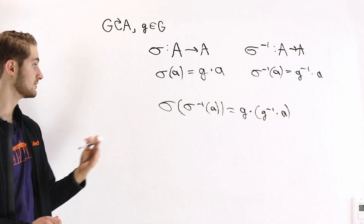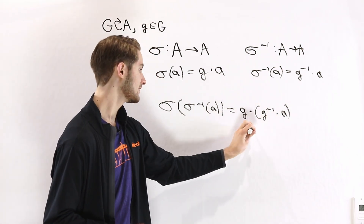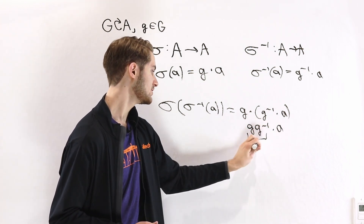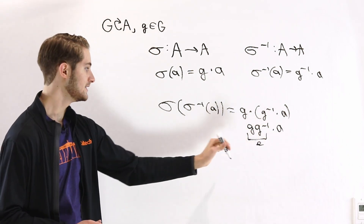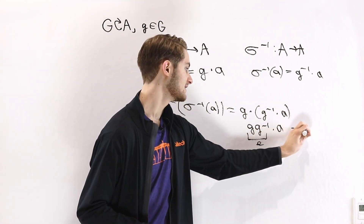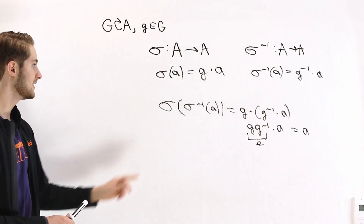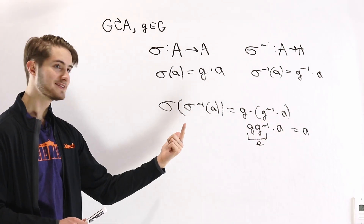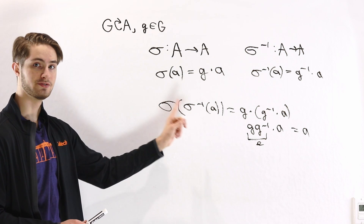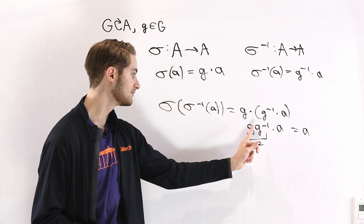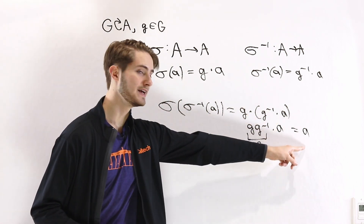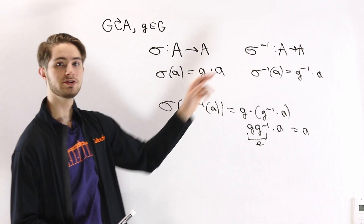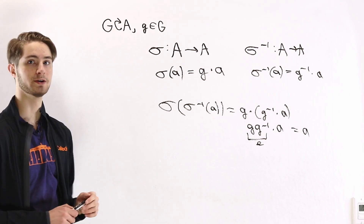Since a group action is associative, we can write this as GG⁻¹ times a, which of course just becomes the identity element E, and E·a gives us a. So σ(σ⁻¹(a)) equals a, meaning we get σ∘σ⁻¹ equal to the identity map. We can do the exact same thing for σ⁻¹(σ(a)), getting G⁻¹G, which again gives us the identity map.